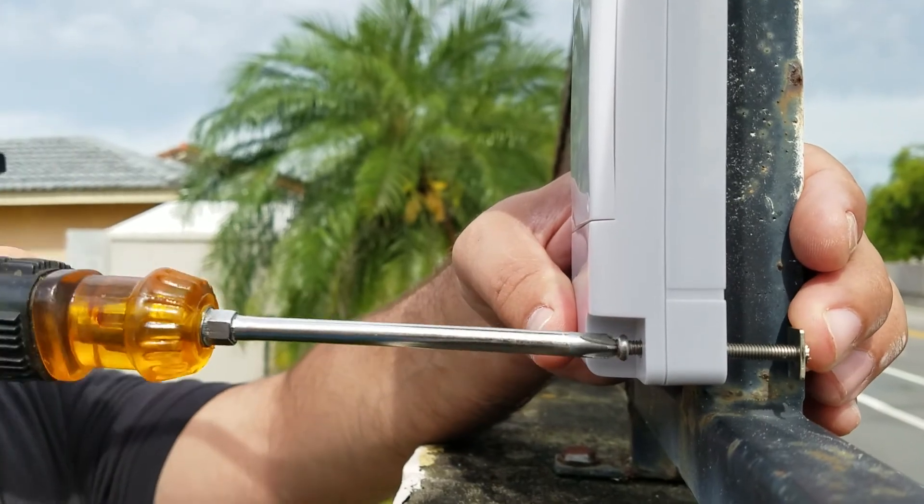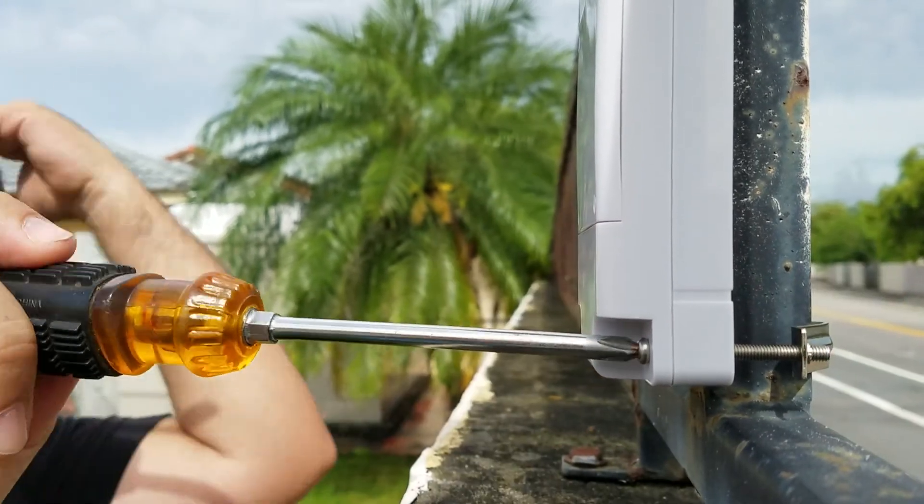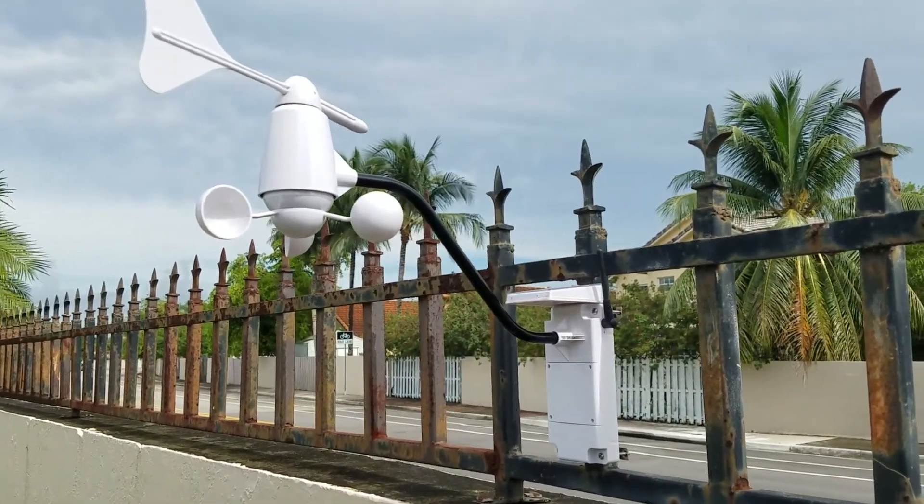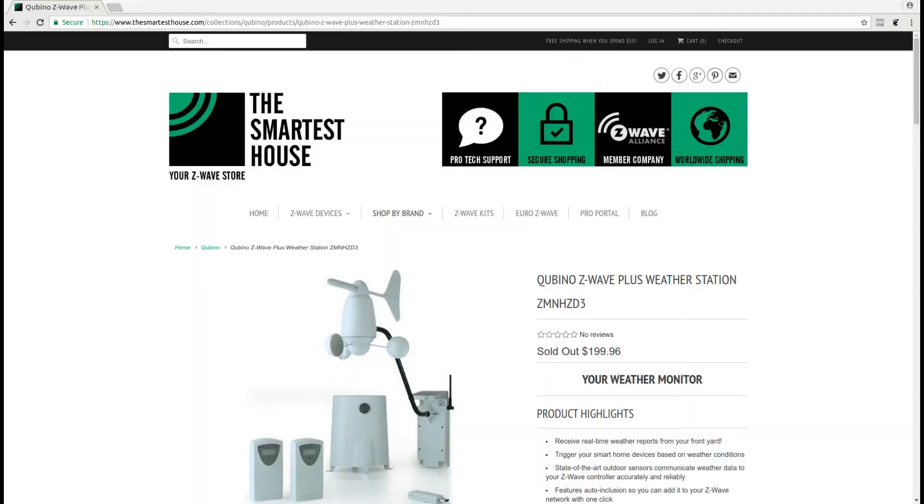Once we placed all our sensors outdoors in their respective locations, we began the pairing with the SmartThings Hub. This is where things get a little tricky. The inclusion of this module to your Z-Wave network is a little cumbersome on the SmartThings Hub. Our weather station came from thesmartesthouse.com, which offered a link to the SmartThings Hub custom device handler that is required for installation.